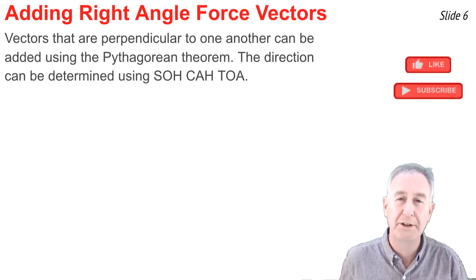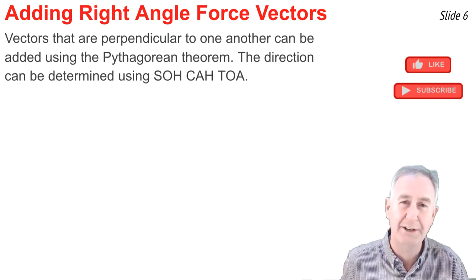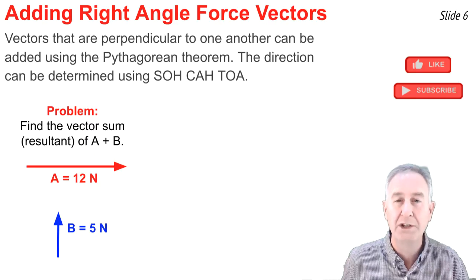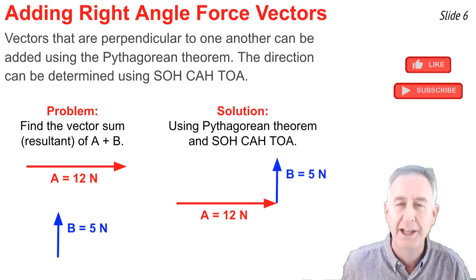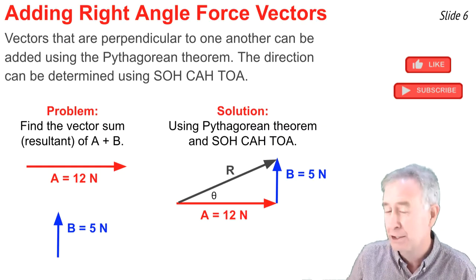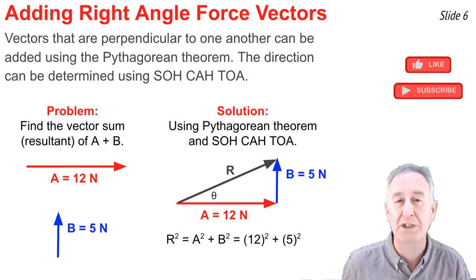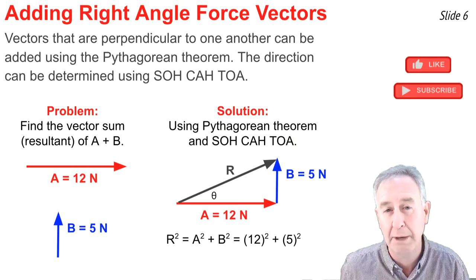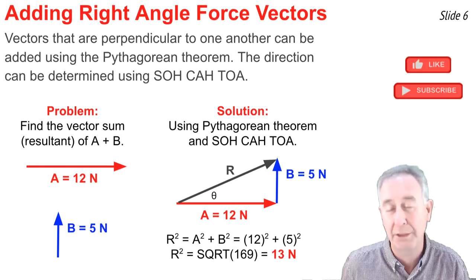When you're adding two vectors that are perpendicular to one another, you can do so using the Pythagorean theorem. Their direction can be determined using trigonometric functions such as sine, cosine, and tangent. Here's an example. I have to add vectors a and b. a is 12 newtons to the right, and b is 5 newtons upwards. So I begin by drawing out the vector a. And then I add vector b to it, employing the head-to-tail method. Now you'll notice that the resultant is drawn from the tail of vector a to the arrow head of vector b. And it becomes the hypotenuse of a right triangle. So to determine its magnitude, I use Pythagorean theorem, claiming that the length of that hypotenuse squared is equal to the sum of the square of the length of the two sides. So r squared is equal to 12 squared plus 5 squared. And using my calculator, that comes out to be 169. Take the square root of 169, and that gives me r. And r comes out to be 13 newtons. That was easy.